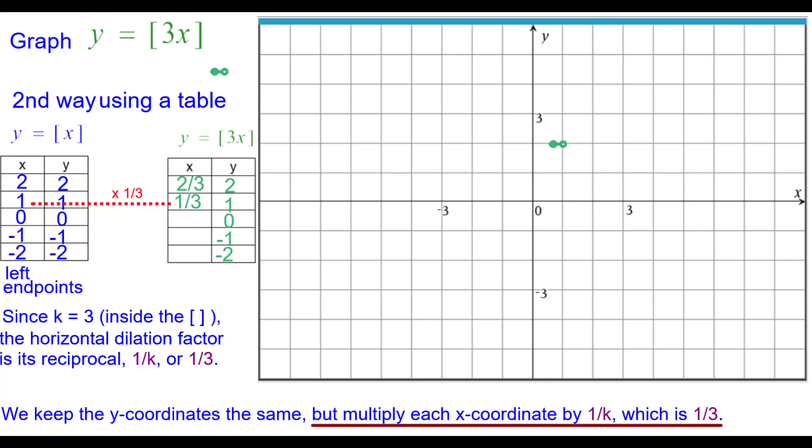1 times 1 third is 1 third. The left endpoint is at 1 third comma 1. 0 times 1 third is 0, so the origin is another step whose width is 1 third. Negative 1 times 1 third, negative 1 third comma negative 1. And negative 2 thirds comma negative 2.